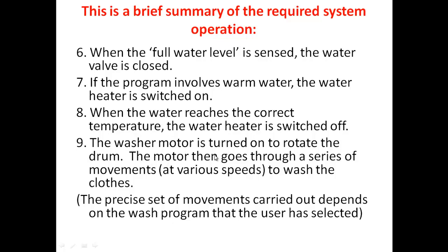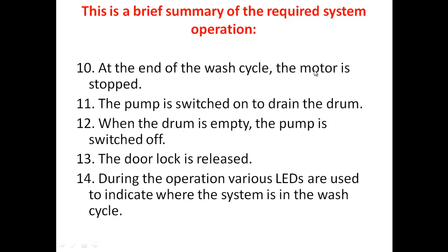Once the motor is turned on, it will rotate. The motor goes through a series of movements — forward, reverse, forward at slow speed, then medium speed, then maximum speed. This depends upon the selection switch you have done. If it is cotton, you can go for high speed; if you are putting silk inside your machine, that much speed is not required. The precise set of movements carried out depends on the wash program that the user has selected. At the end of the wash cycle, the motor is stopped.